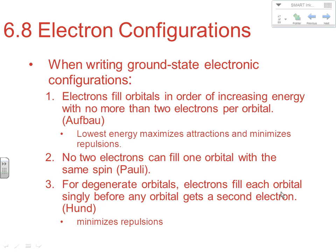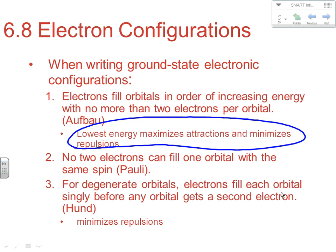Electrons fill in orbitals of increasing energy with no more than two electrons per orbital — that's Aufbau. Lowest energy maximizes our attraction and minimizes our repulsions, and that's really what reality is all about with charged particles. You are most stable when you've maximized attractions and minimized repulsions. So when we talk about Aufbau, lowest to highest energy, we're really looking at maximizing attractions and minimizing repulsions.